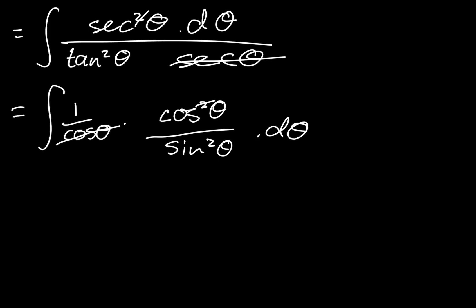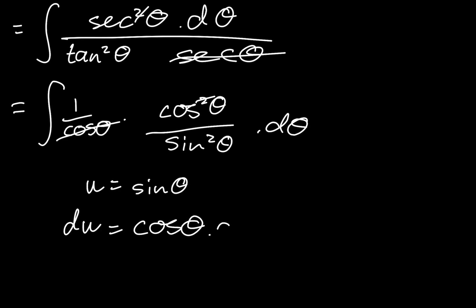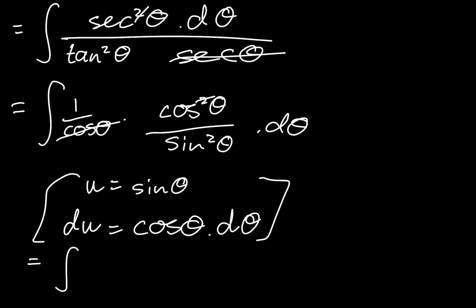That makes it much simpler. Now we can make another substitution: let u equal sine of theta. Deriving u in terms of theta gives us cosine of theta. In the numerator we have cosine of theta d theta, and we substitute in du for that. So our integral becomes 1 over u squared, du.